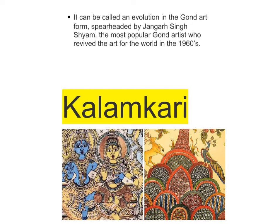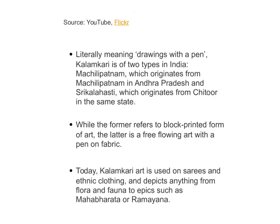The sixth painting is Kalamkari, from Andhra Pradesh. The name comes from 'Kalam' meaning pen, and 'Kari' meaning drawing — so Kalamkari means drawing with the pen. There are two types: one originated in Machilipatnam in Andhra Pradesh, and the other is Srikalahasti, which originated from Chittor — two styles from the same state.